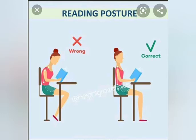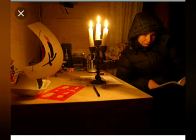Care of our eyes. Sit up straight while reading. Keep your book about 12 inches away from your eyes. Do not read in dim light. Make sure that your shadow does not fall on the book while you read.